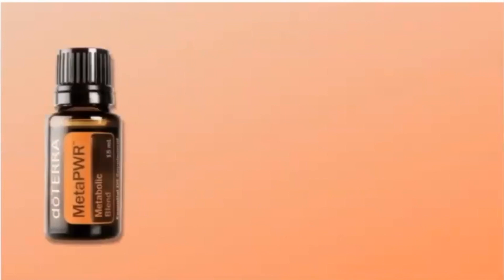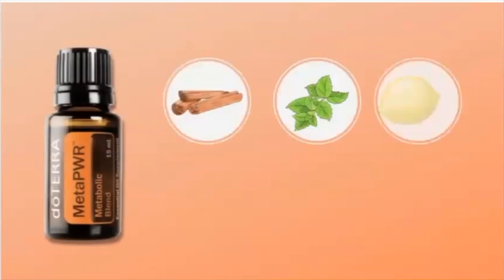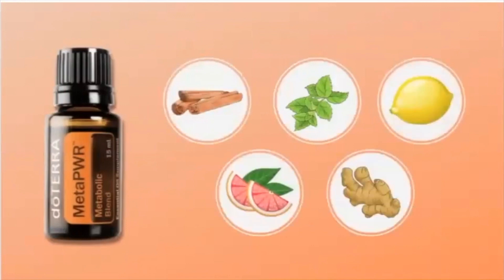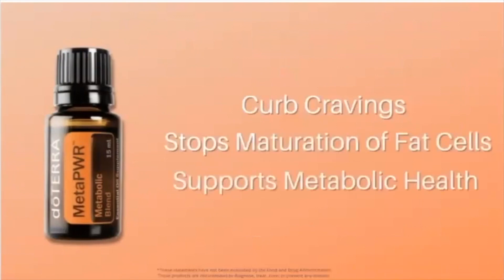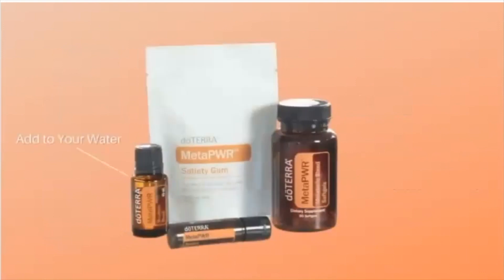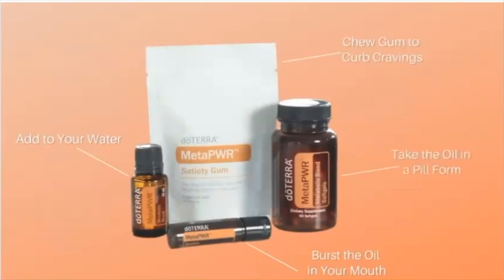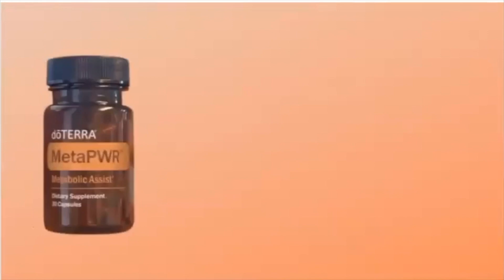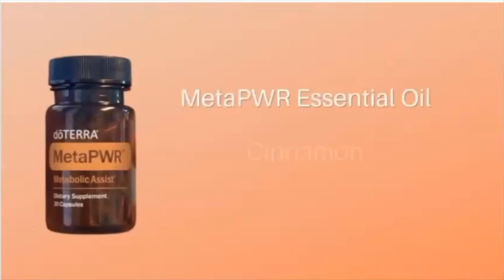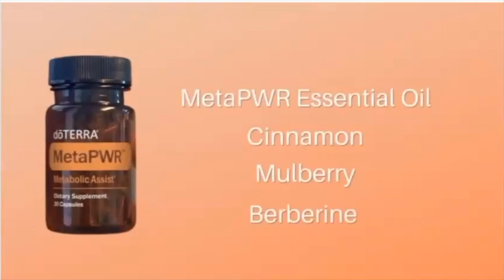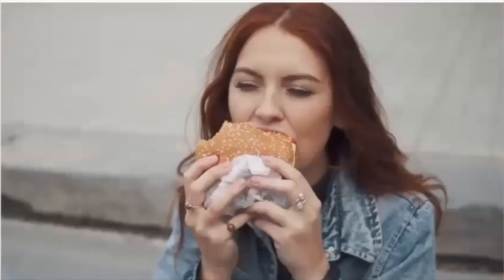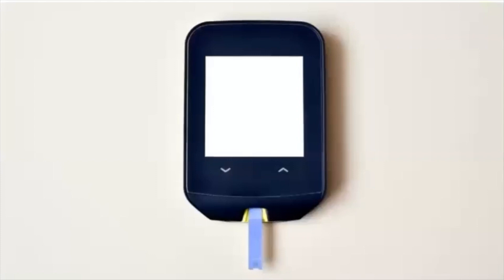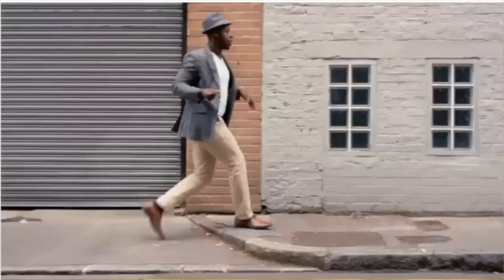MetaPower is a metabolic health line unlike anything you've ever seen. It starts with the MetaPower essential oil, which is a blend of cinnamon, peppermint, lemon, grapefruit, and ginger — synergistically blended to curb cravings, stop the maturing of fat cells, and support your metabolic health. It comes in four product options: the oil to drop in water throughout your day, feedlets for a burst of MetaPower oil in your mouth, gum to chew that helps keep cravings away, and soft gels. MetaPower Assist has the MetaPower oil plus more cinnamon, mulberry, and berberine to stabilize your glucose levels. Take it once a day with your heaviest meal — it will decrease post-meal glucose spikes and help maintain balanced blood sugars and sustainable energy throughout the day.